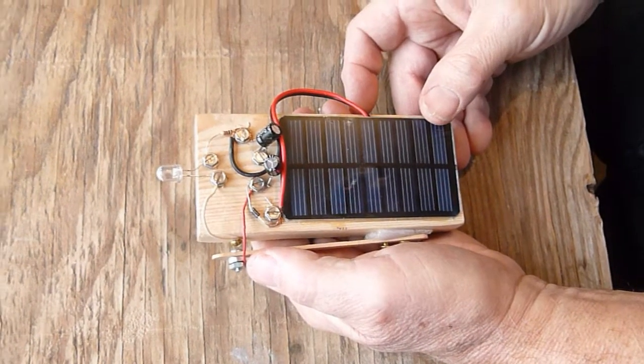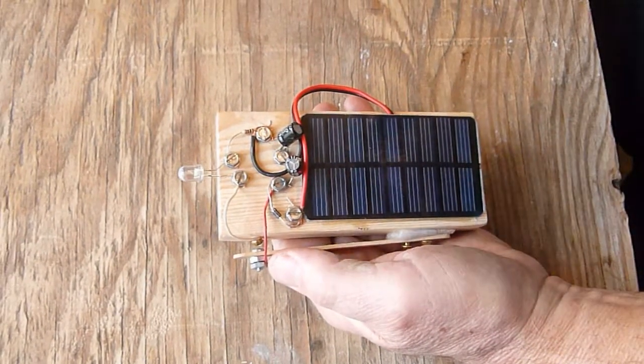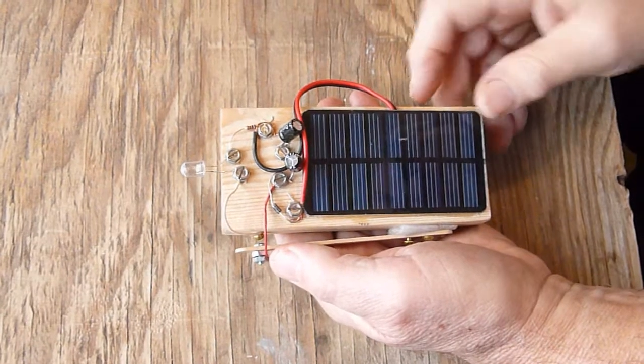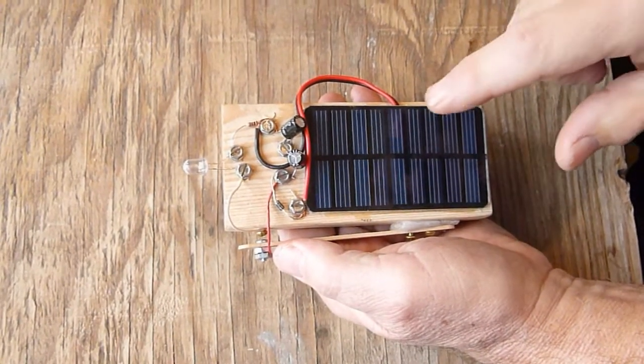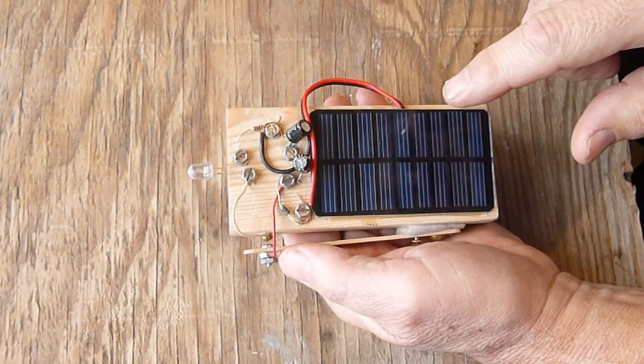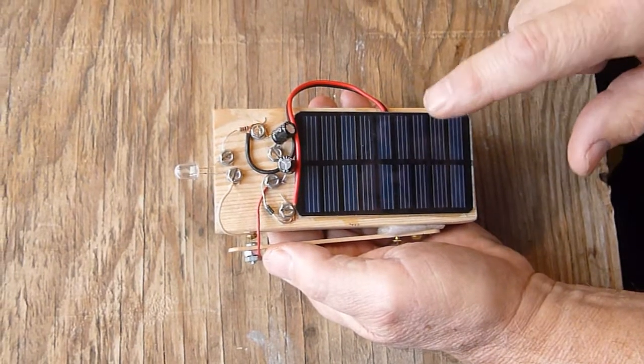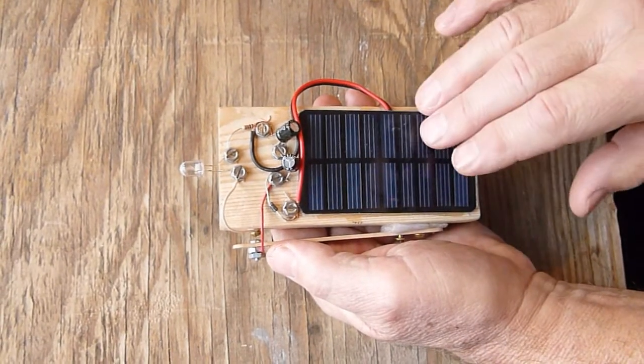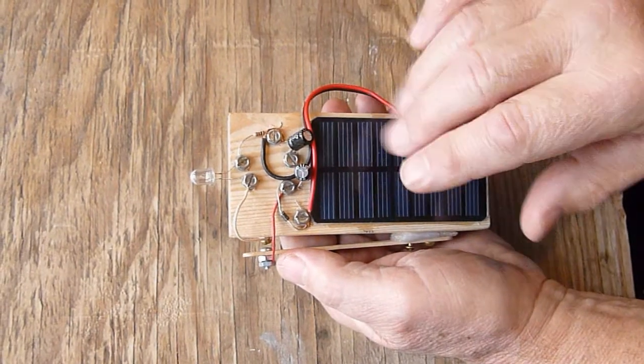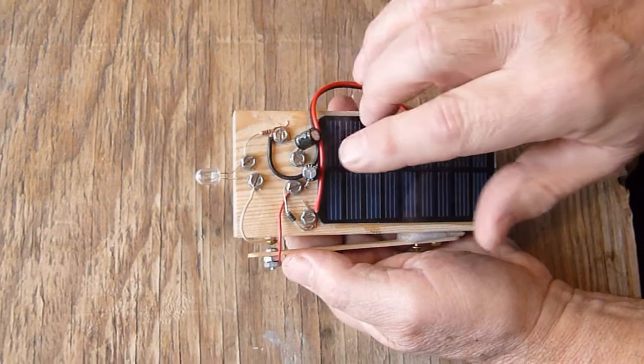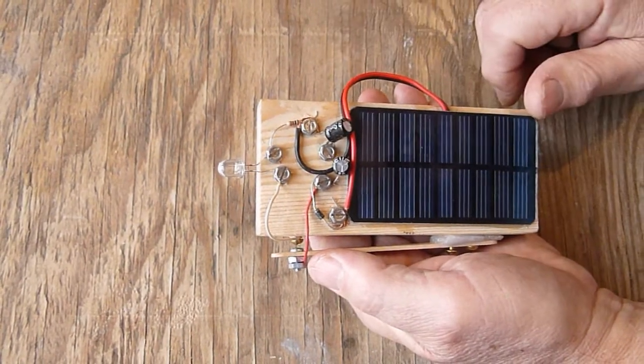In Episode 3 of this series, we showed how to make this solar-powered flashlight which has no batteries. I bet you are wondering where the energy comes from to light the LED. Well, here is a solar panel which changes light energy into electrical energy. You probably are wondering where the energy comes from when it's dark. This project is designed so that the electrical energy generated by the solar panel is stored in capacitors.